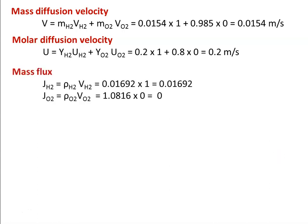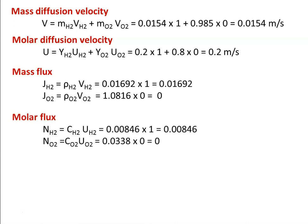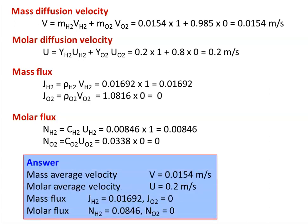Mass flux: JH2 = ρH2 × VH2 = 0.01692. JO2 = ρO2 × VO2 = 0. Molar flux: NH2 = CH2 × UH2 = 0.00846. NO2 = CO2 × UO2 = 0. Answers: mass average velocity V = 0.0154 m/s, molar average velocity U = 0.2 m/s, mass flux JH2 = 0.01692, JO2 = 0, molar flux NH2 = 0.00846, NO2 = 0.